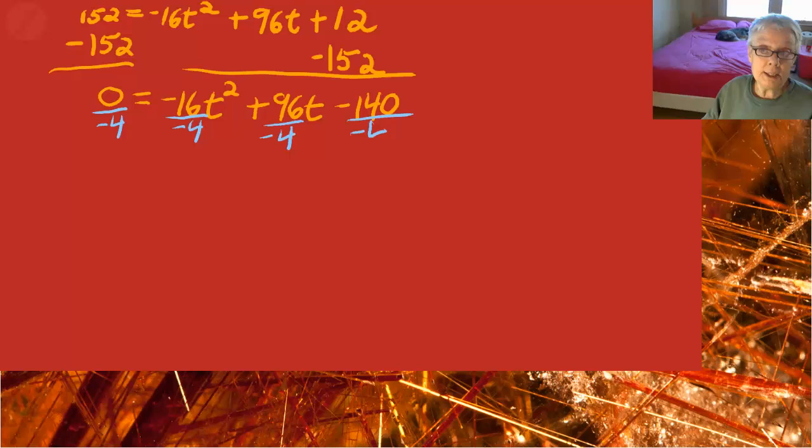And that gives me zero on the left equals 4t square minus 24t. Oops, I left out the t, that always irritates me, plus 35.